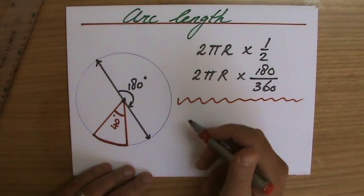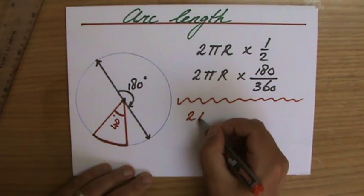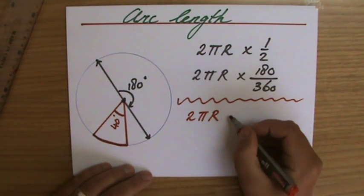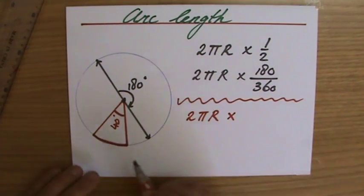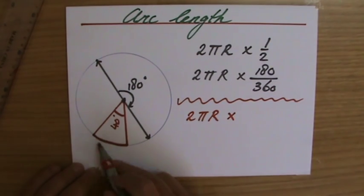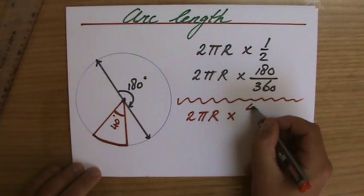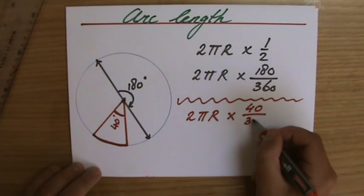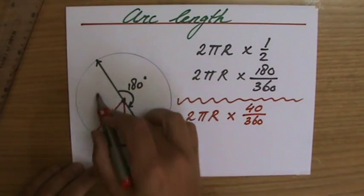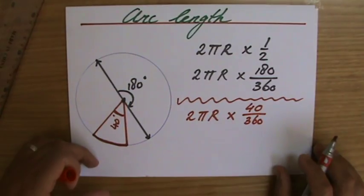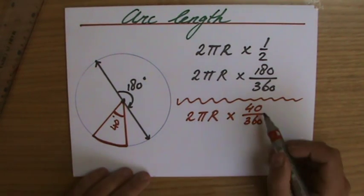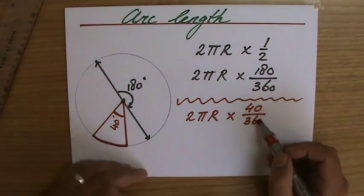Well, the circumference of the whole circle is 2πr. But I've got to times that by that part of the circle, that fraction of the circle I'm interested in. And what is my fraction? Well, that is 40 out of 360, 360 degrees in a full turn. And that's what you always do. You look at that fraction of the circle you're interested in.